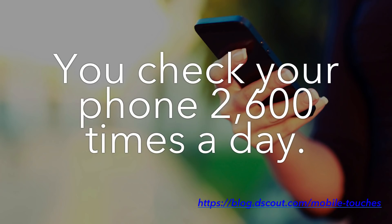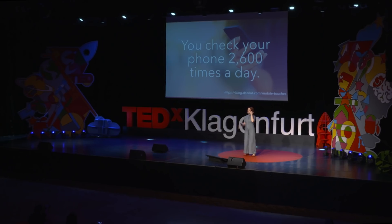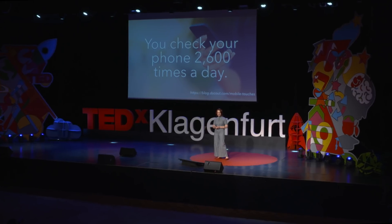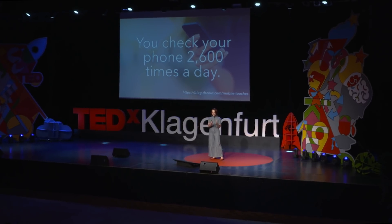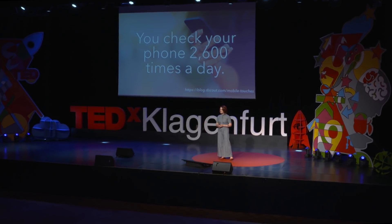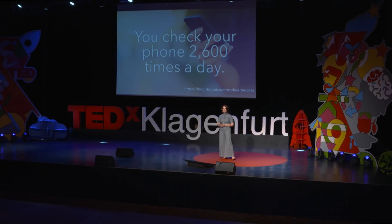Now, this really adds up, considering that you, yes, you, check your phone 2,600 times a day. It might be a phantom vibration, it might be just to check the time. Regardless, 2,600 times a day you're interrupting your thought process. And that's just with your phone — this doesn't account for any of the other devices that you're using.